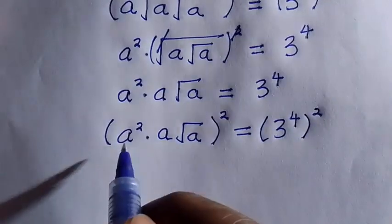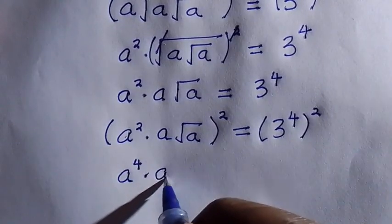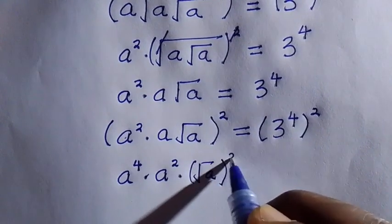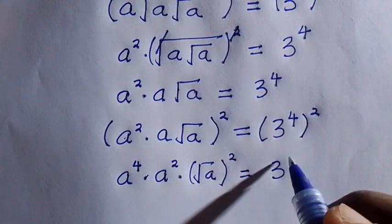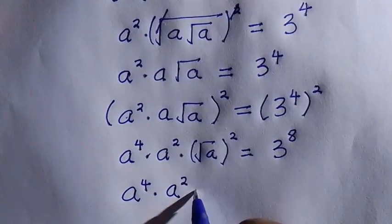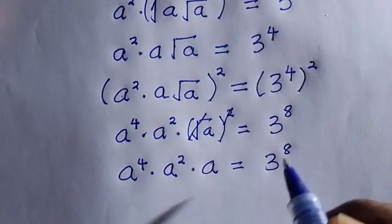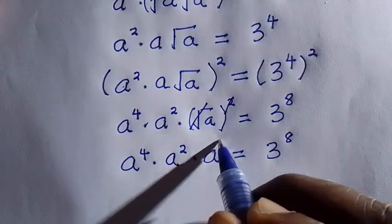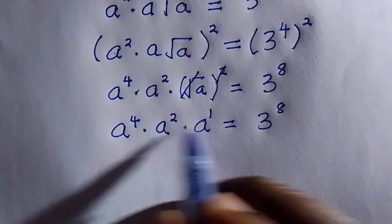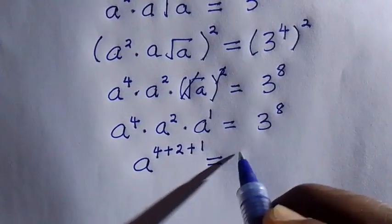Here we have a to the power of 2, we take 2 and we get a to the power of 4. Multiplied by this a, we take 2 and we have a to the power of 2. The root a we also take the power of 2, and everything equals 3 to the power of 8, since 4 multiplied by 2 gives us 8. So here we have a to the power of 4 multiplied by a to the power of 2 multiplied by a equals 3 to the power of 8. For this a it is raised to the power of 1, so we apply the product rule of exponents and add the powers together, giving a to the power of 4 plus 2 plus 1 equals 3 to the power of 8.